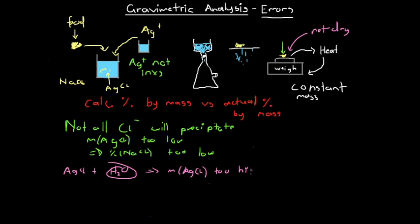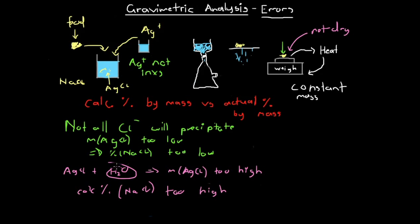As a result of the moist precipitate, we'll think there are more chloride ions and more sodium chloride than there actually are, so our calculated percentage by mass of sodium chloride will also be too high — higher than the actual percentage by mass. To be precise with our terminology, we should always refer to the 'calculated percentage by mass' compared to the 'actual percentage by mass' — those two keywords, calculated and actual, are key.